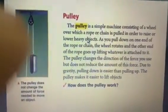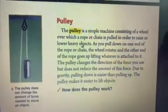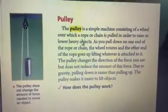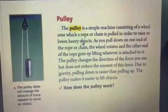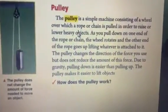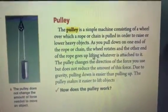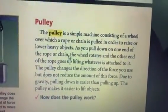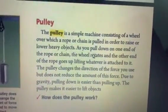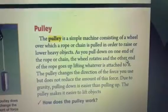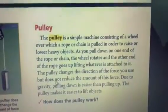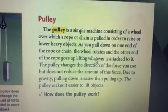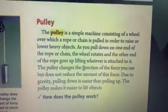A pulley is a simple machine consisting of a wheel over which a rope or a chain is pulled in order to raise or lower heavy objects. As you pull down on one end of the rope or chain, the wheel rotates and the other end of the rope goes up, lifting whatever it's attached to.